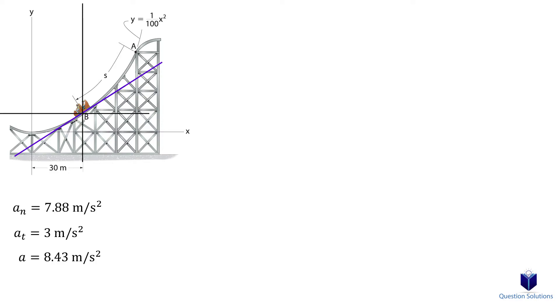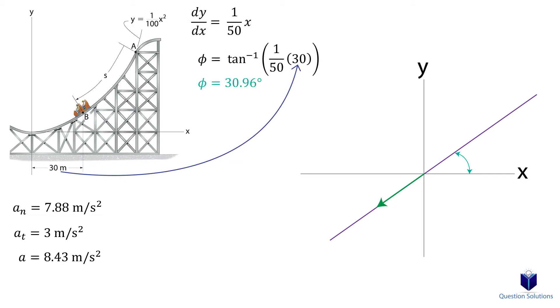This tangent line is actually the tangential acceleration. Now we need to figure out the angle this tangent line makes with the x-axis. We can do that by using the first derivative and using the inverse of tan. So that gives us an angle of 30.96 degrees.